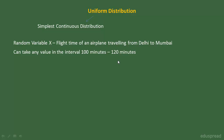Can you tell me if x is a discrete random variable or a continuous random variable? Well in this case x is a continuous random variable because it can assume any value in the interval 100 minutes to 120 minutes.